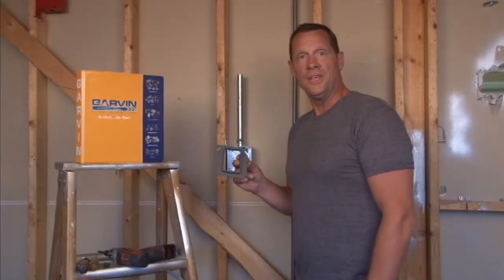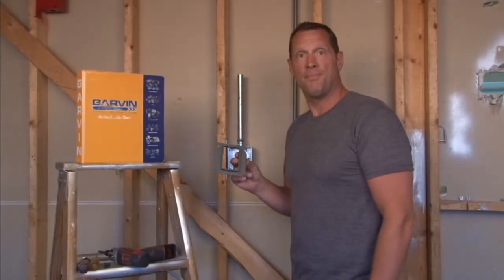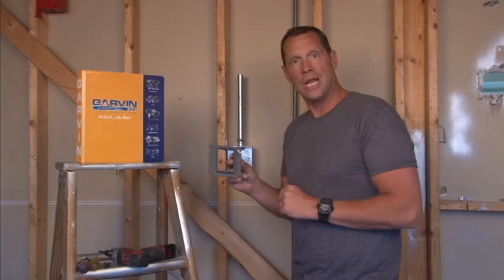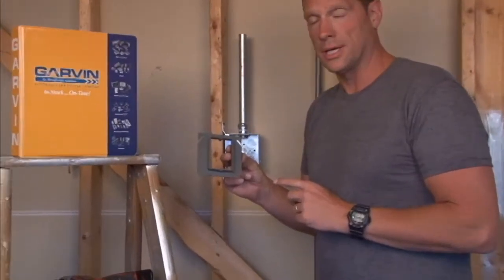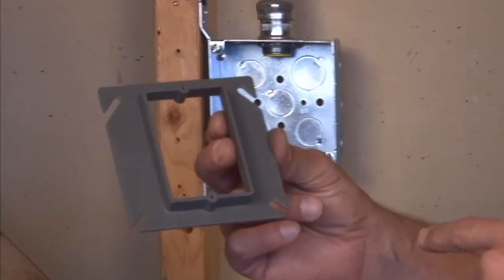Garvin Industries part number 52C13-P stands for plastic or non-metallic single gang 4 inch square plaster ring. A plaster ring is used in this way.